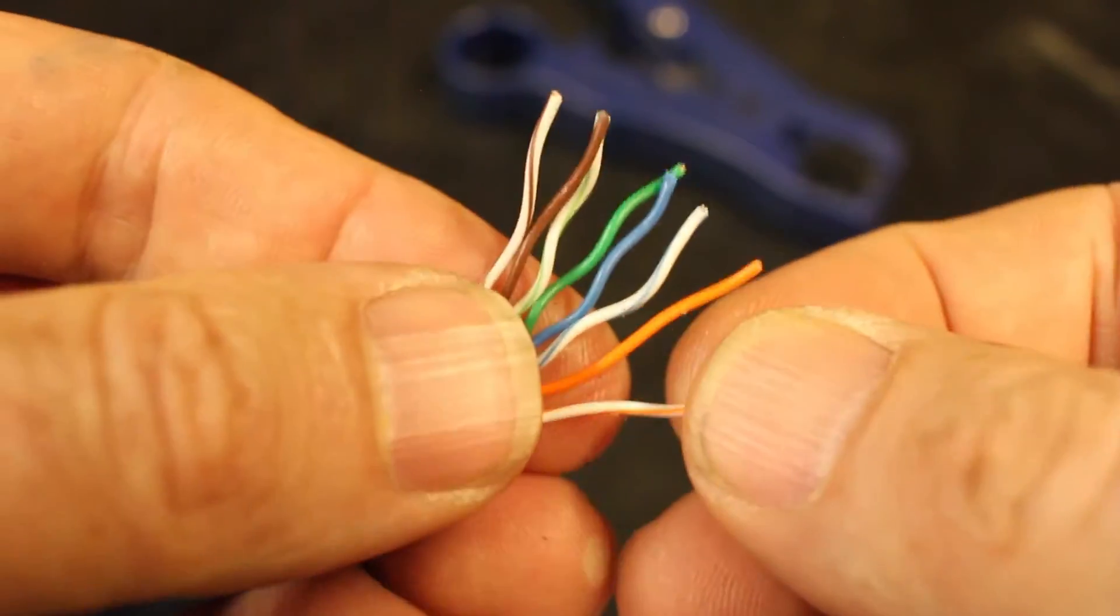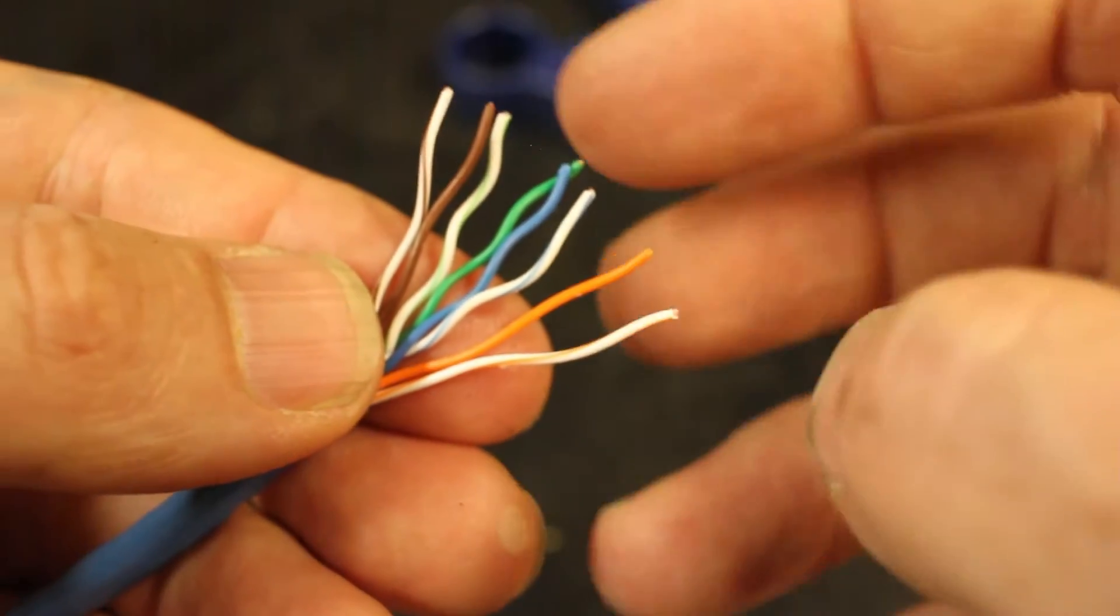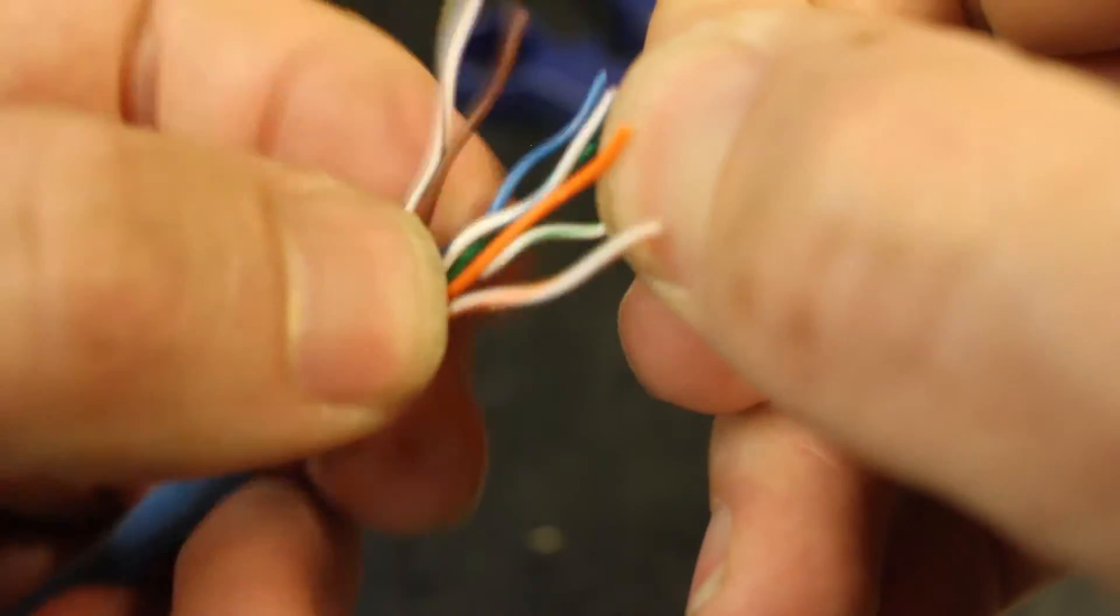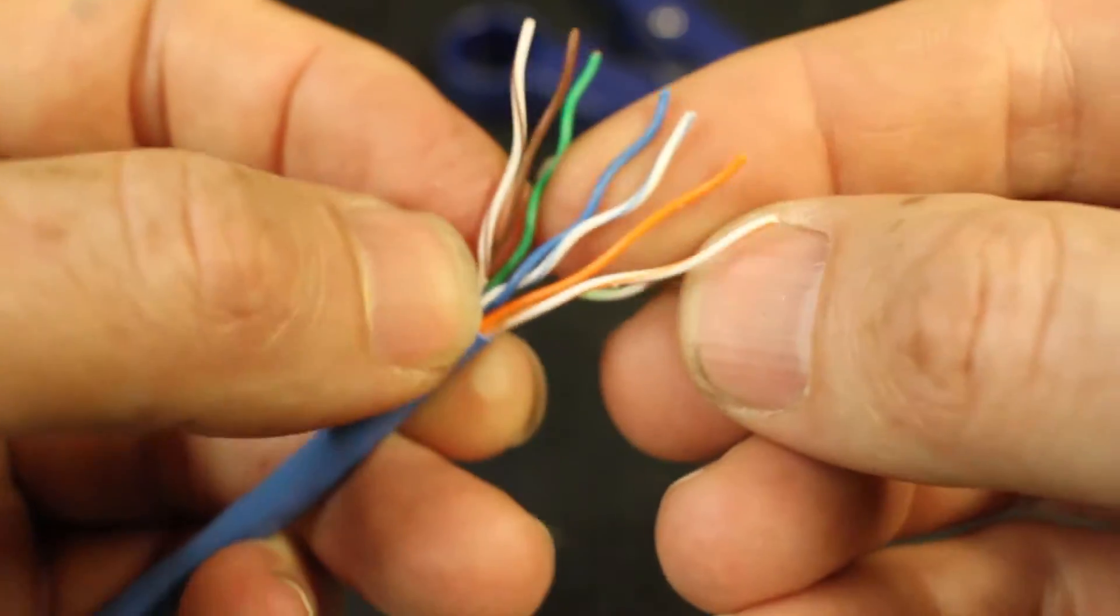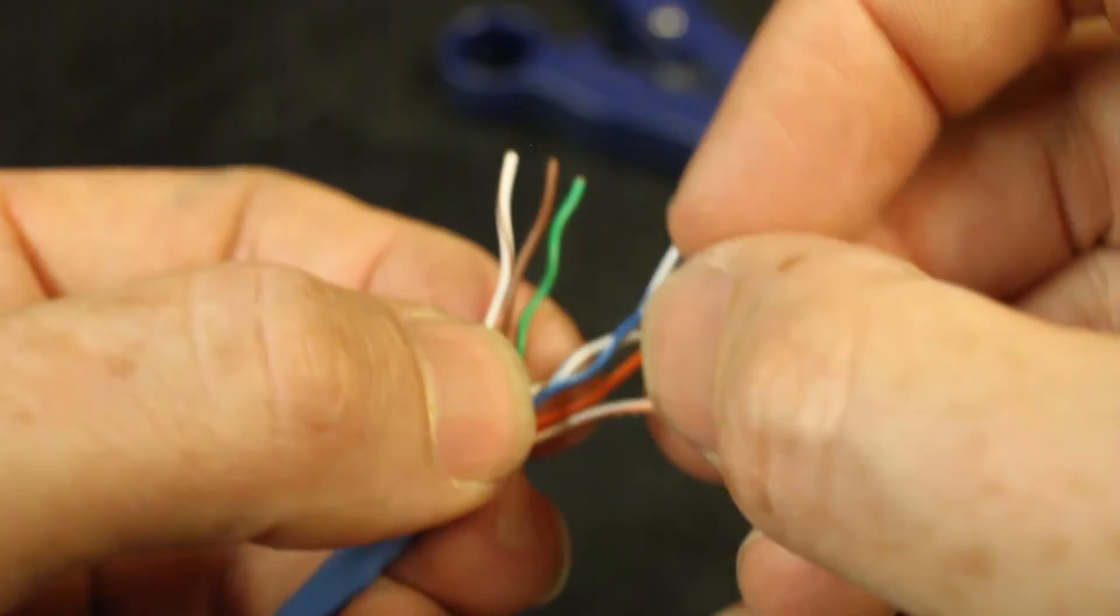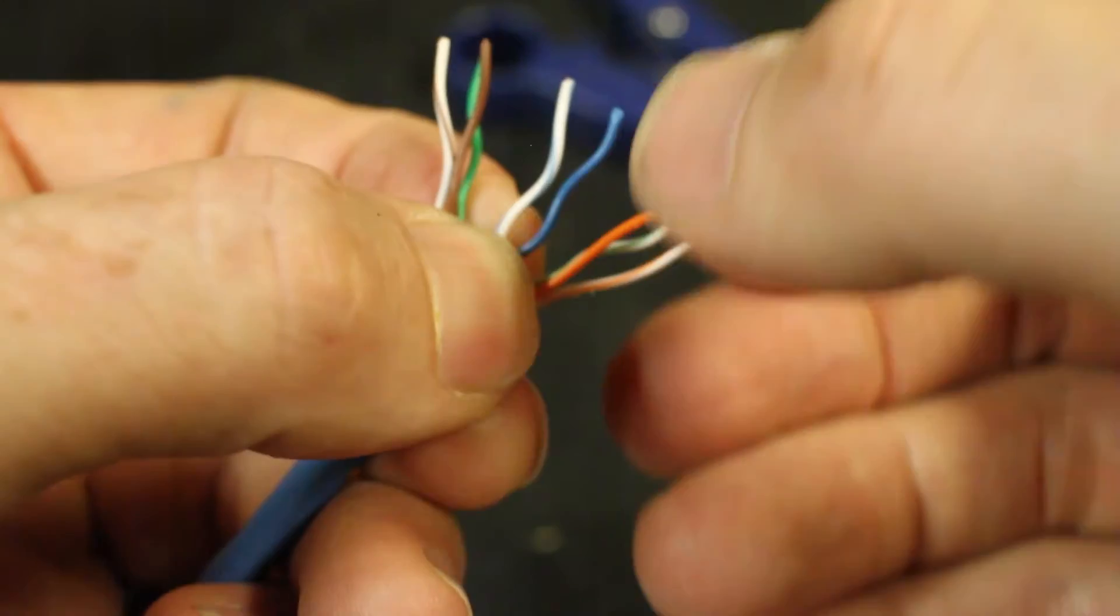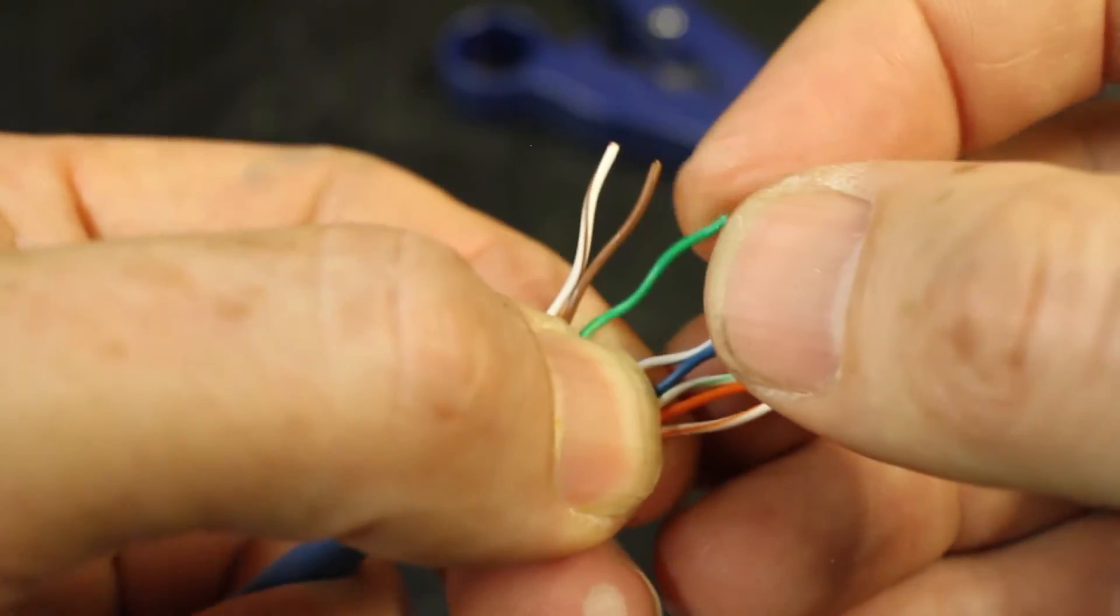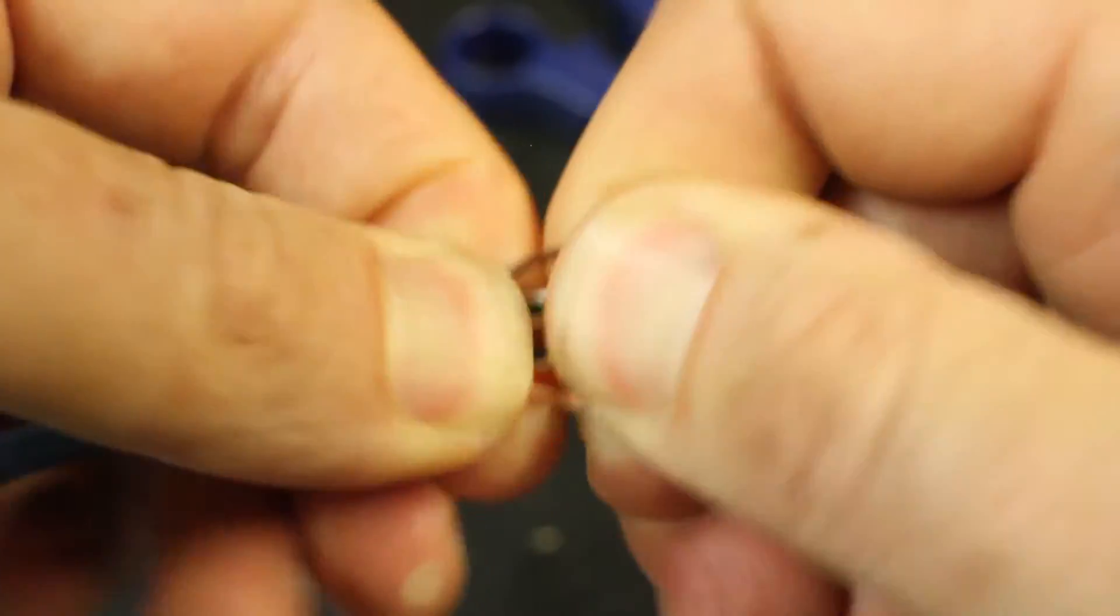Okay, I've got all these separated now. I've got orange, white, orange. The order is going to go in as orange, white, orange, and then we're going to grab the green-white. So orange, white, orange, green-white, then blue, then blue-white, then green, and then the brown-white and the brown. So once you get them in that order.